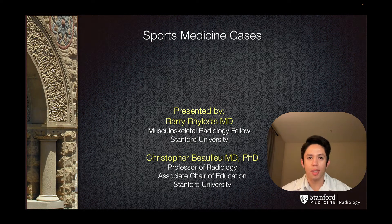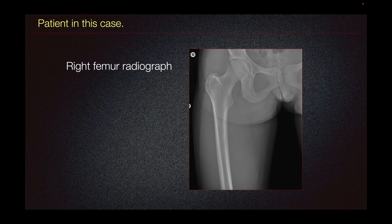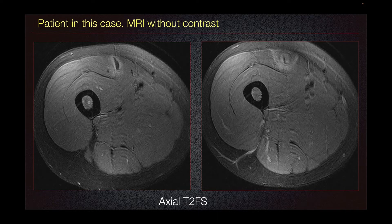This is Barry Bellosis, one of the Musculoskeletal Radiology Fellows at Stanford University. A 15-year-old female soccer and track athlete presents with right anterior thigh pain, concerned for chronic distal myotendinous junction rectus femoris tear. The patient presents with this right femur radiograph. Radiographs can be obtained to exclude any bony abnormalities; however, in cases of muscle strain, radiographs are typically normal. The patient in this case presented with this MRI without contrast.